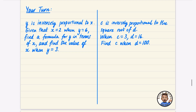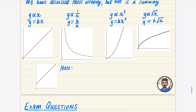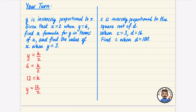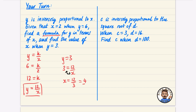Now for practice problems. First: y is inversely proportional to x, so y = k/x. When x = 2, y = 6: 6 = k/2, so k = 6 × 2 = 12. The formula is y = 12/x. To find x when y = 3: 3 = 12/x. Using the swap shortcut, x = 12/3 = 4.